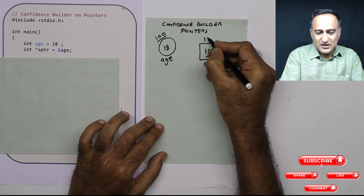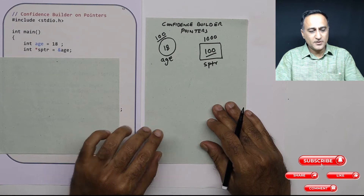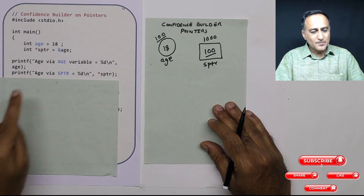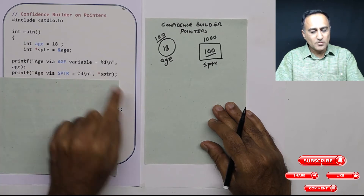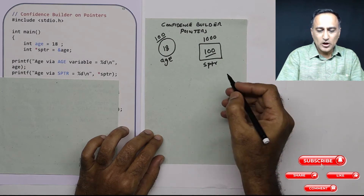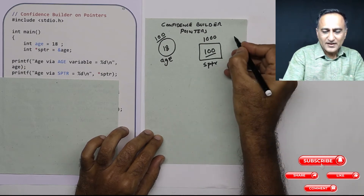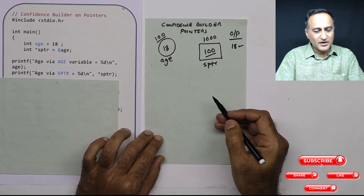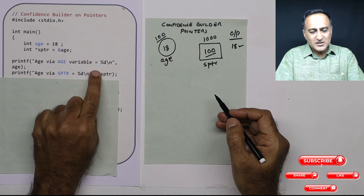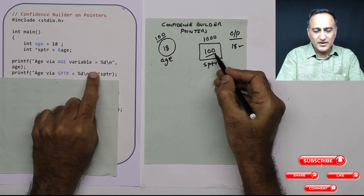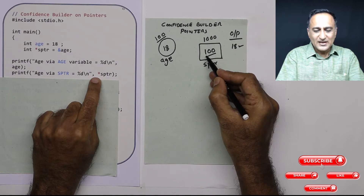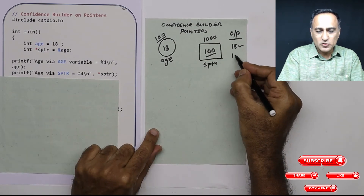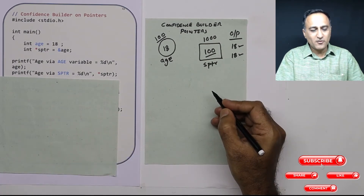Let's say sptr resides at location 1000. Now I am going to simply print age using the normal percentage d format, so the output will show 18 printed first, which is the value of age. If I just print sptr it's going to print 100. The star tells me what is the value at address 100, and the value at address 100 also happens to be 18. So this is how I take care of printing 18.